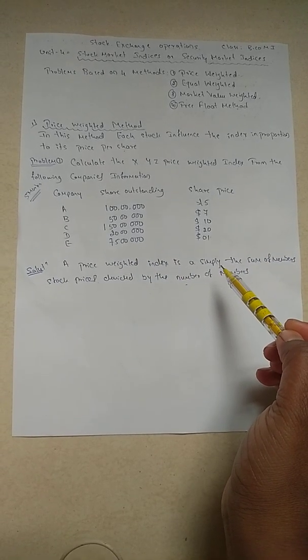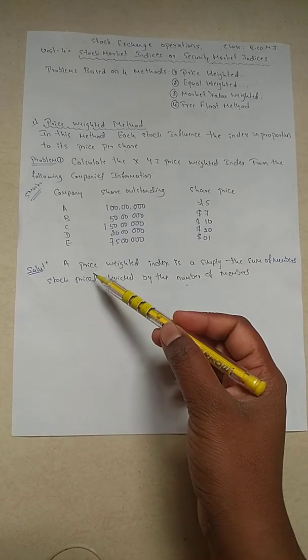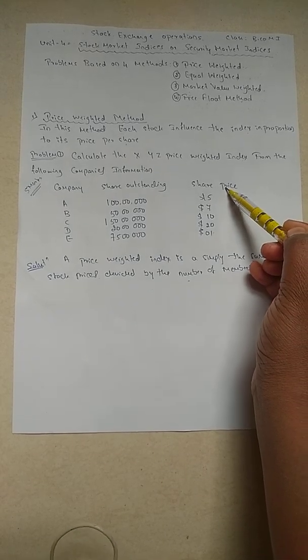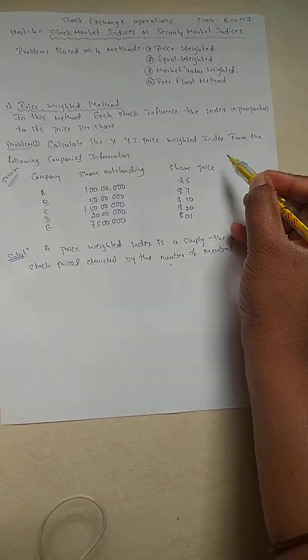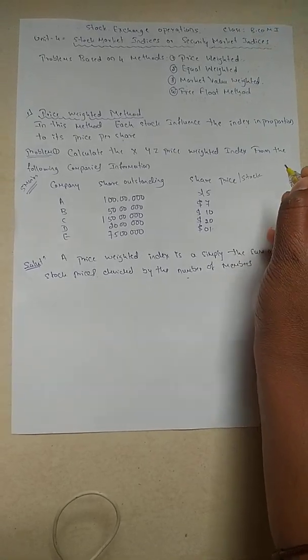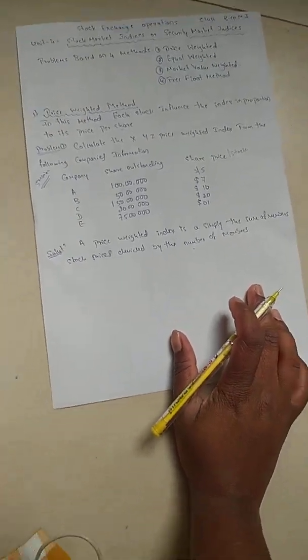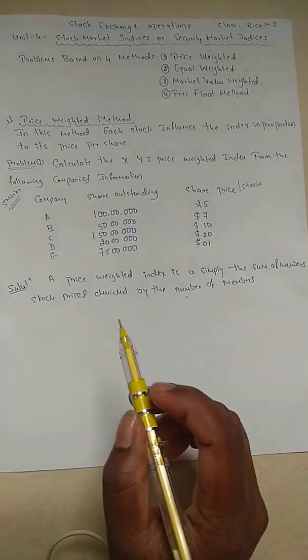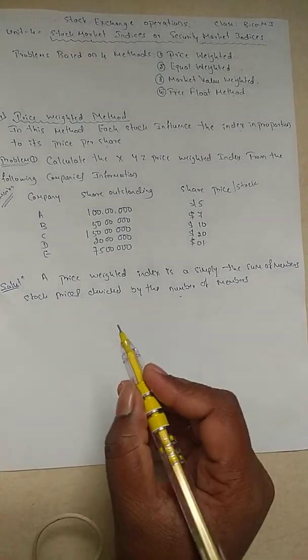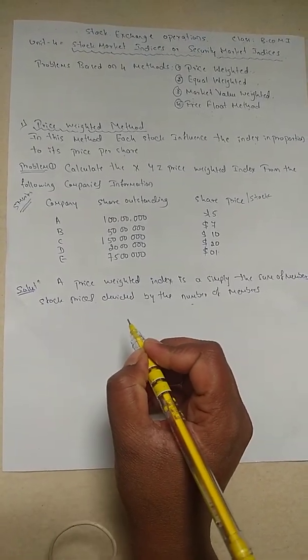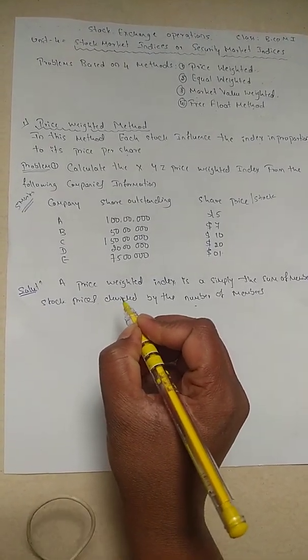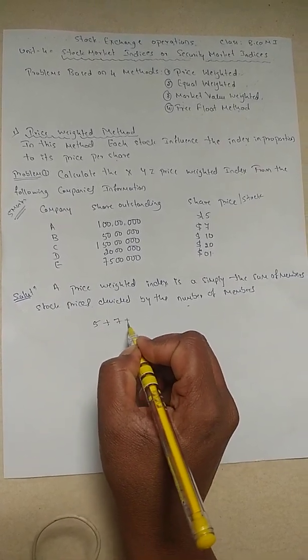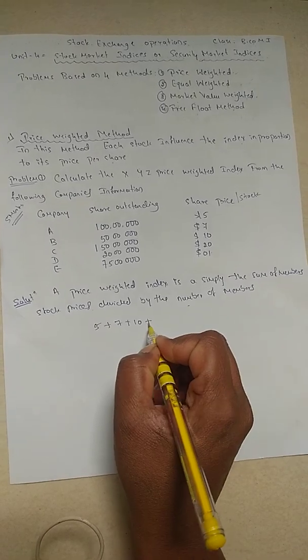Here what they have told - simply the sum of stock prices. The share price and stock price are one and the same. The sum of stock prices means we have to add all the stock prices: 5 + 7 + 10 + 20 + 1.